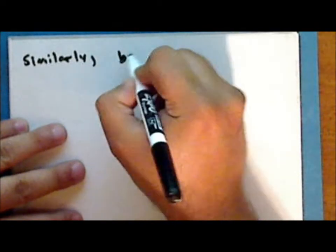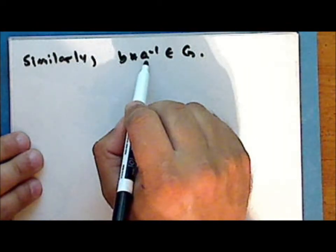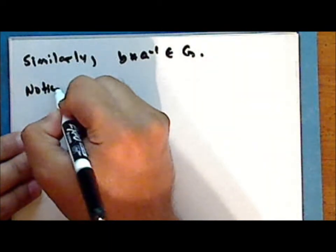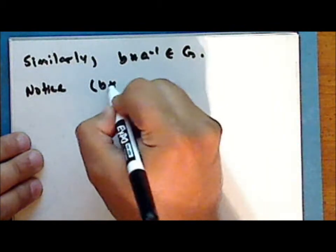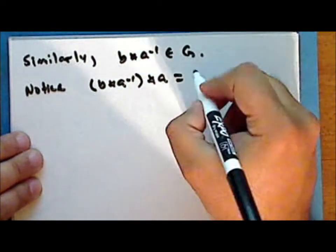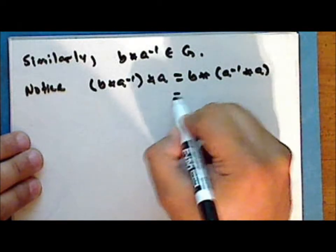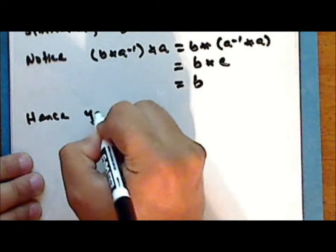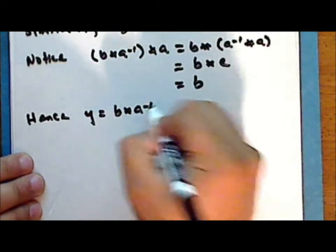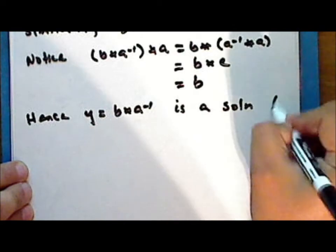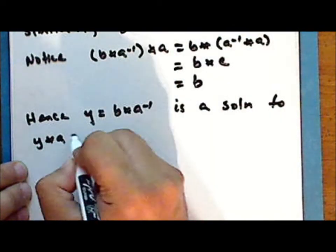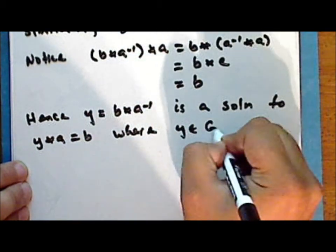Similarly, B star A-inverse is an element in the underlying set G, since both the element B and A-inverse are in the set. Notice that (B star A-inverse) star A is the same as B star (A-inverse star A), since the operation is associative, and this is B star identity, which is B. Hence Y equals B star A-inverse is a solution to the equation Y star A equals B, where Y is in the underlying set G.